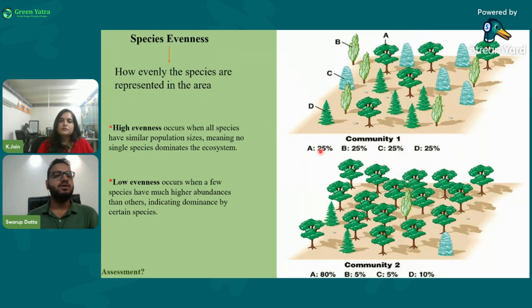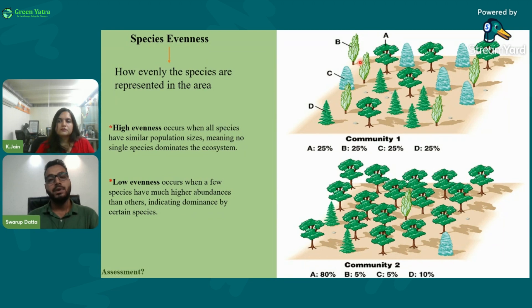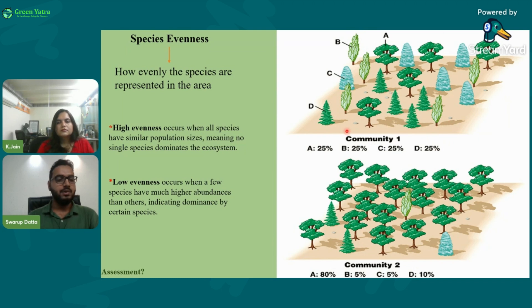Species evenness refers to how evenly species are distributed in an area. In one image, tree species A covers 80% of the area, making evenness very low. In another, species A, B, and C are all present in good numbers — species evenness is very high. Although the number of species is the same in both areas, the one with evenly distributed species is considered a biodiversity-rich area.